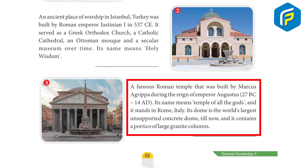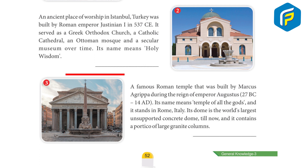Number three: a famous Roman temple built by Marcus Agrippa during the reign of Emperor Augustus, 27 BC to 14 AD. Its name means 'temple of all the gods' and it stands in Rome, Italy. Its dome is the world's largest unsupported concrete dome to this day, and it features a portico of large granite columns. Answer: Pantheon.